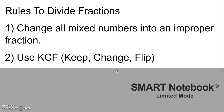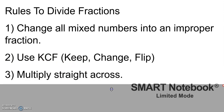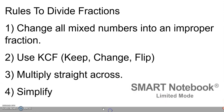The second step is we need to use the KCF, which stands for Keep Change Flip. The flip is really finding the reciprocal of that last term. When we put it in examples, you'll better understand that. Your third step is then to multiply straight across, which we've done before when multiplying fractions. And last but not least, once you're done multiplying, you need to simplify and put it into smallest terms.